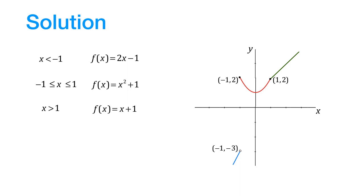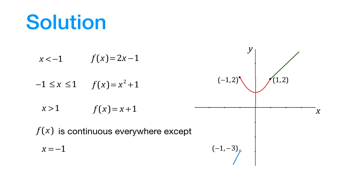Looking at the graph of this function, it is very clear that it is discontinuous at the point x equal to minus 1. In fact, the right-hand limit of this function at x equal to minus 1 is equal to plus 2, whereas the left-hand limit is equal to minus 3. These two limits do not agree, which means the function is discontinuous at x equal to minus 1. The function is continuous everywhere else, so we can say that it is discontinuous only at x equal to minus 1.